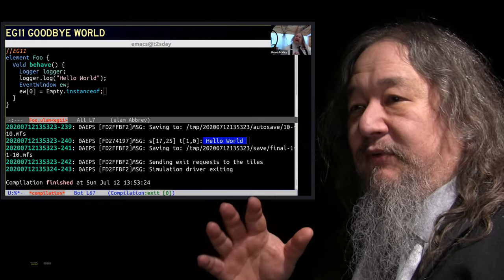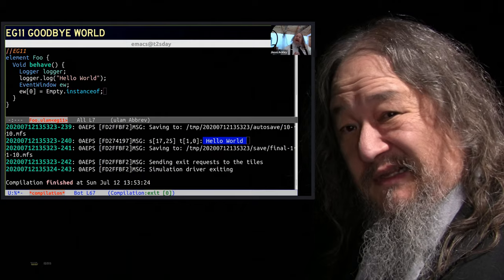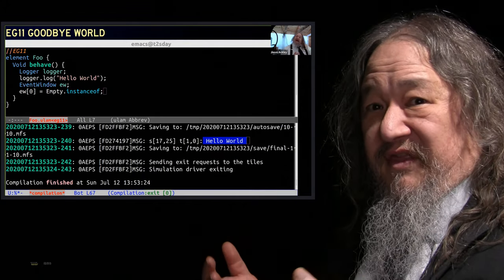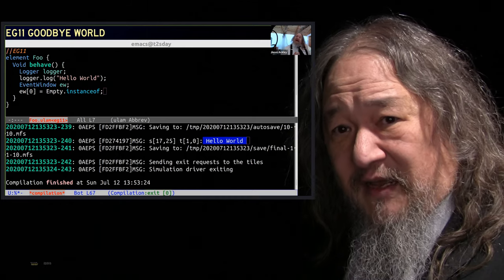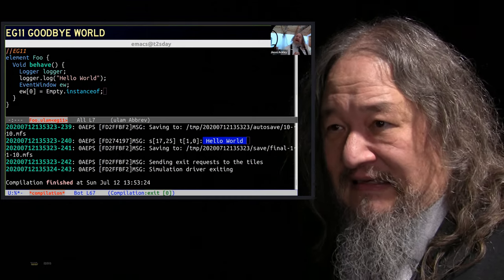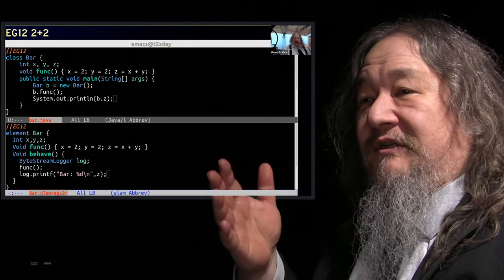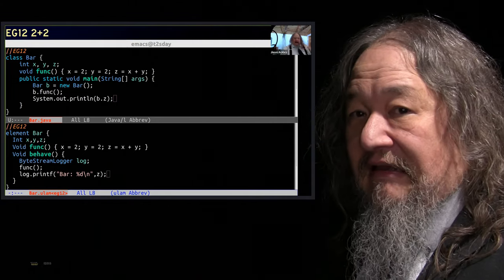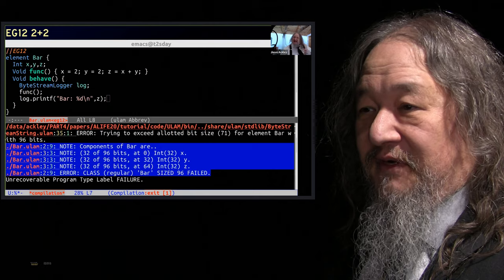I did examples like Hello World, which was pointing out that it's really like Goodbye World, right? Because a typical Hello World program, it does one thing, and then it exits. Living computations don't exit lightly. I did 2 plus 2. Why do 2 plus 2? Because you say int xyz. Well, you can't do that in Ulam. It takes up too much space.